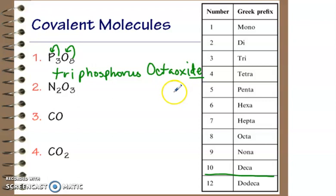The last word, these are always two words, right? The last one always ends in the ide even though there isn't a negative ion here, it'll always end in the ide. Let's look at this one. Maybe you want to pause it and try it yourself first. We've got two nitrogens so two means di, so dinitrogen.